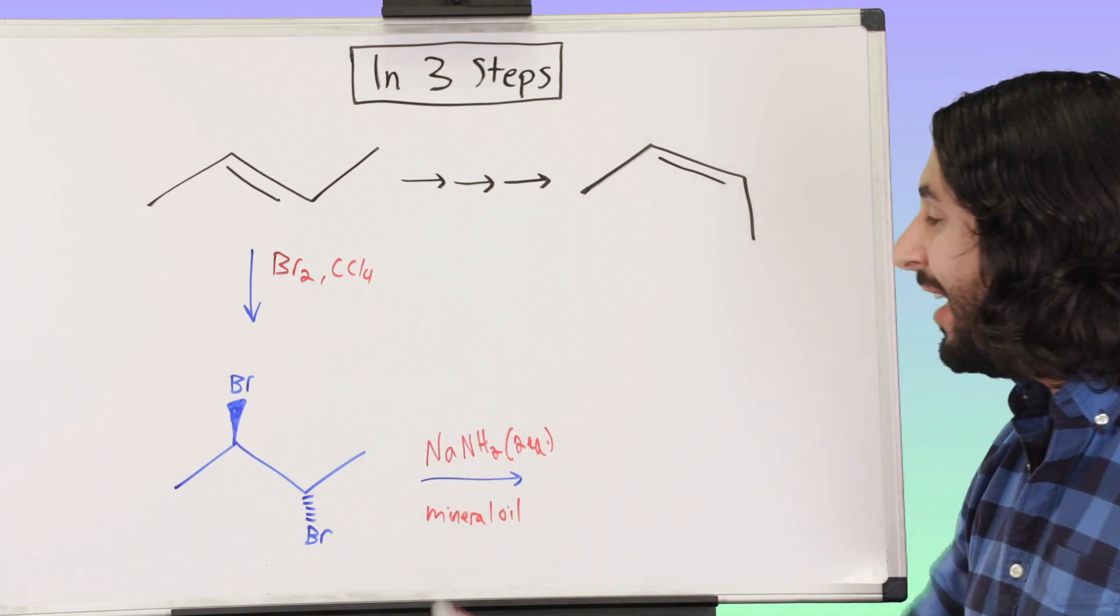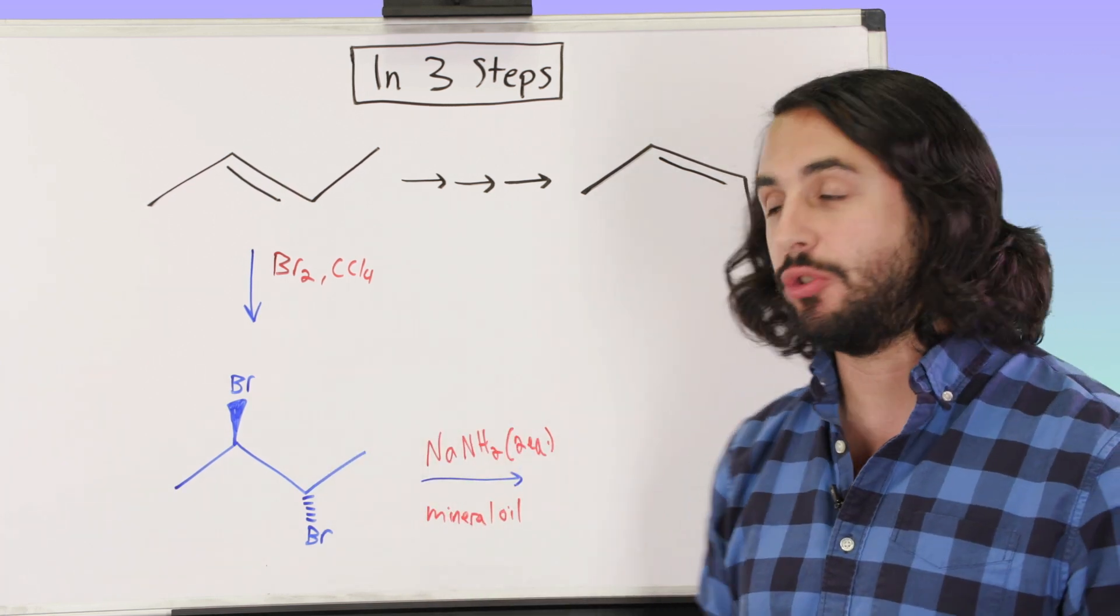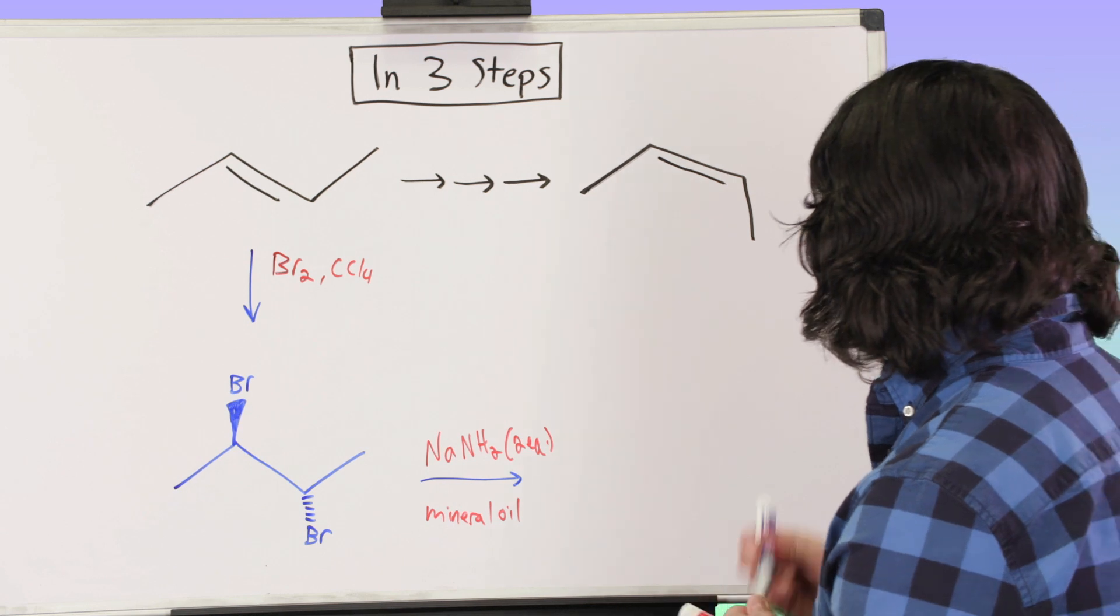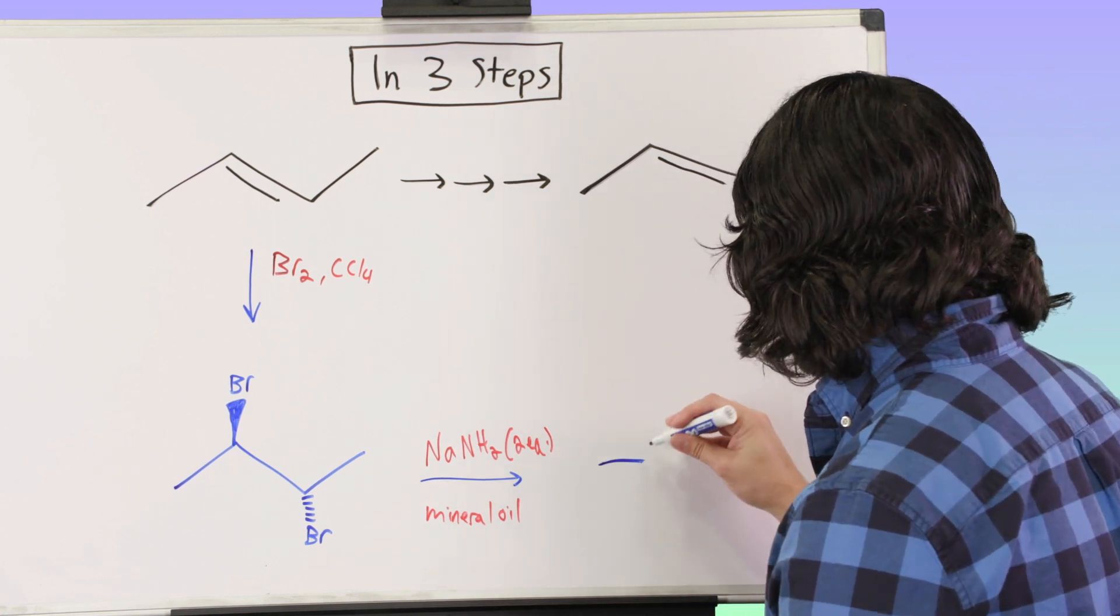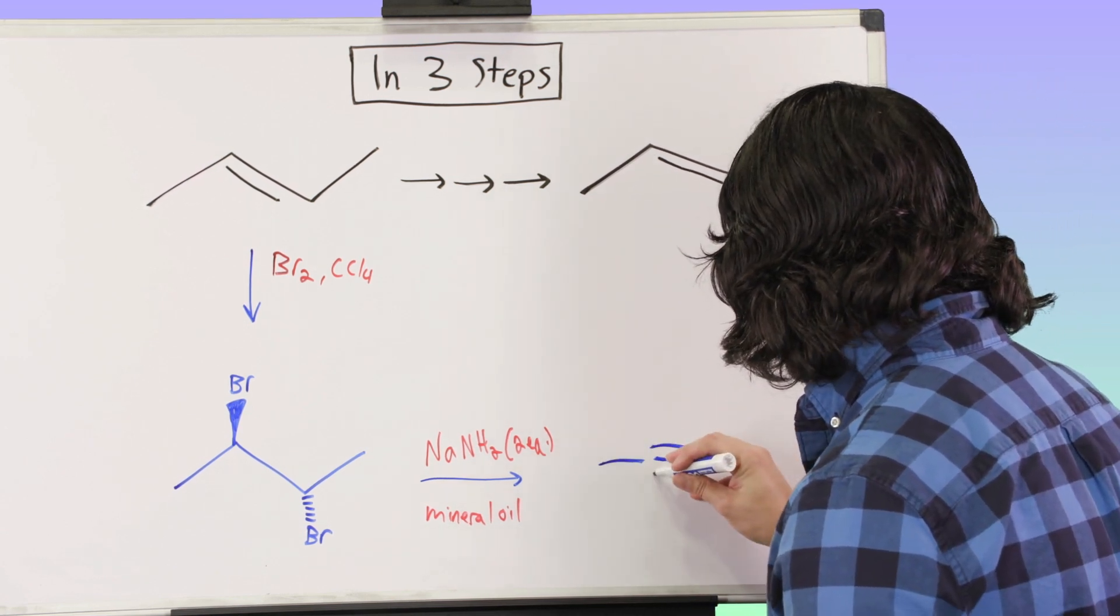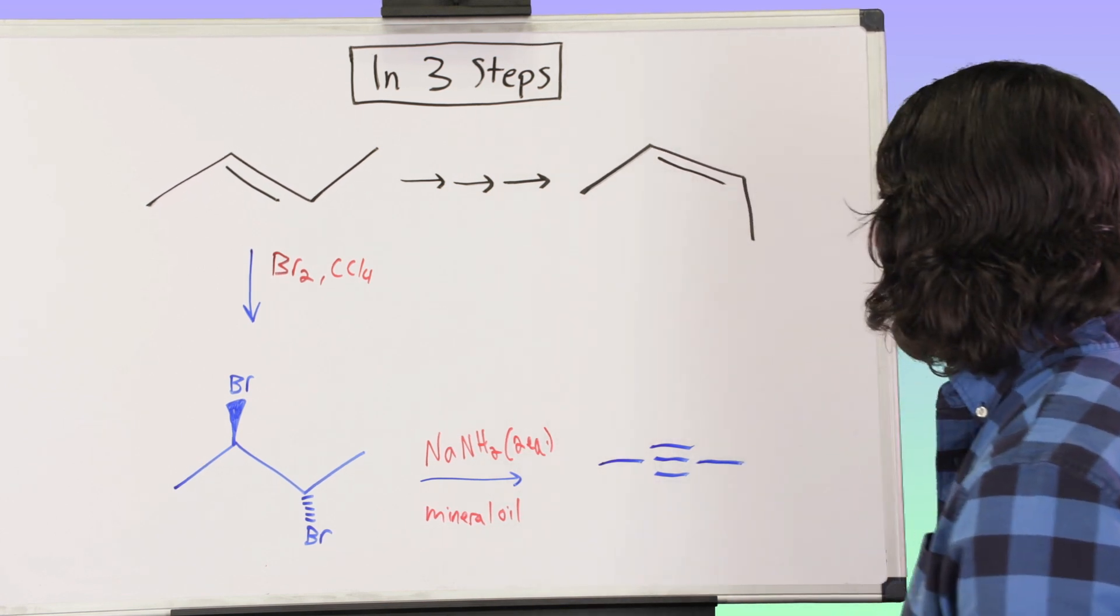NH2 minus is a very strong base that's going to grab a proton and do one elimination. Then it's going to grab the other proton, do the other elimination, and we're going to get to that alkyne.